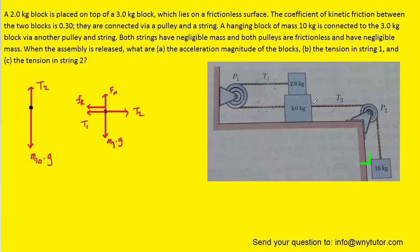For the three-kilogram block, we can see that there are several forces acting. We have tension T2 pulling the block to the right. We have tension T1 pointing to the left. Because there's a block on top and that block is sliding past the three-kilogram block, there's actually a kinetic frictional force acting between the two blocks, and we've included that force in the diagram. Notice that it's pointing to the left.